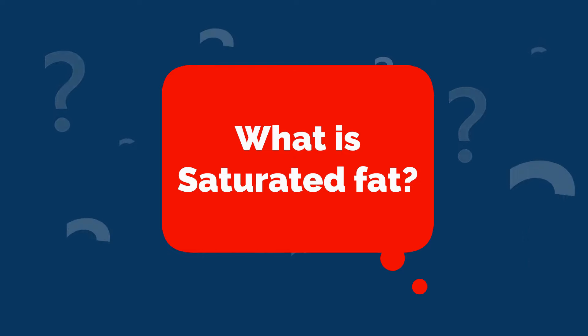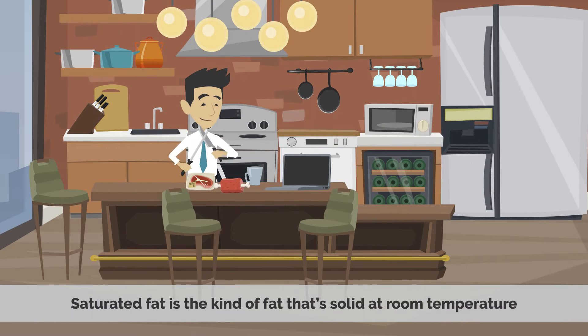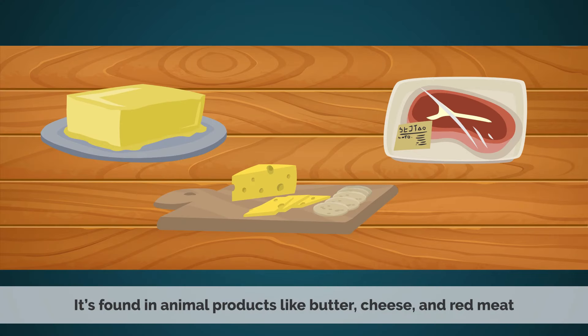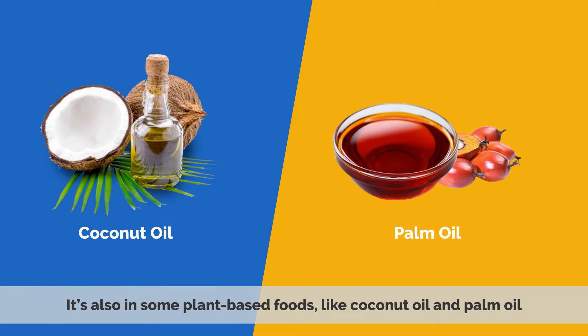What is saturated fat? Saturated fat is the kind of fat that's solid at room temperature. It has all of its carbon atoms bonded to hydrogen atoms, which makes it a saturated fat. It is found in animal products like butter, cheese, and red meat, but also in some plant-based foods like coconut oil and palm oil.